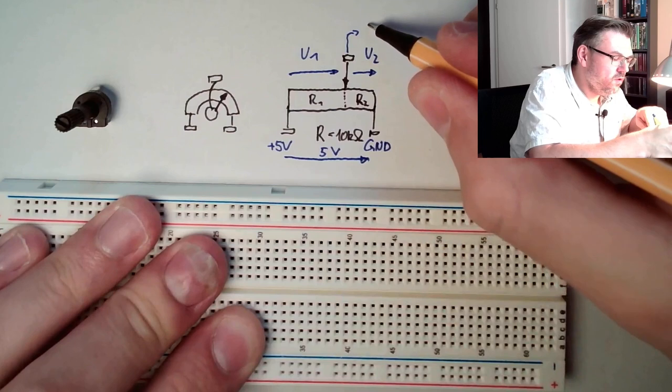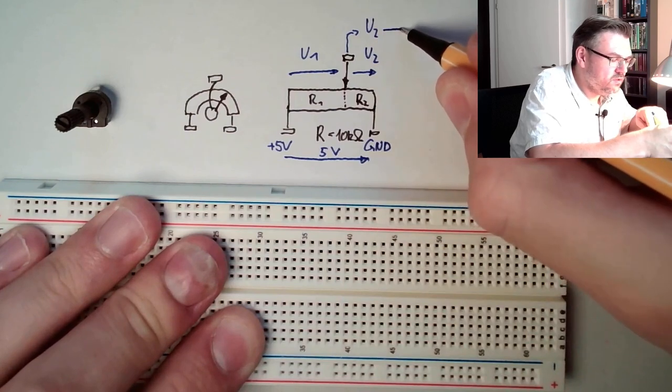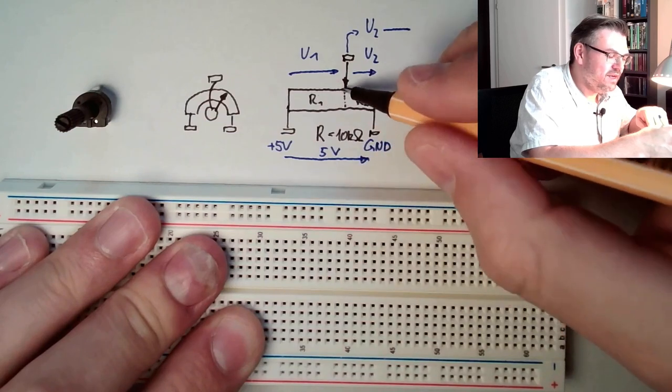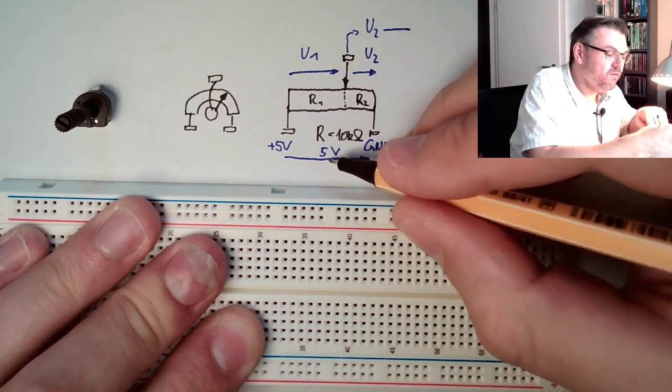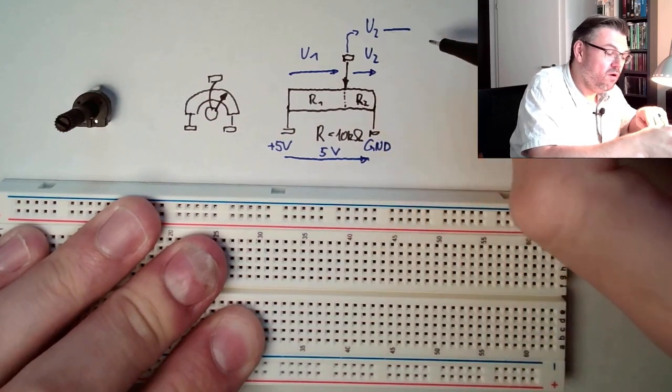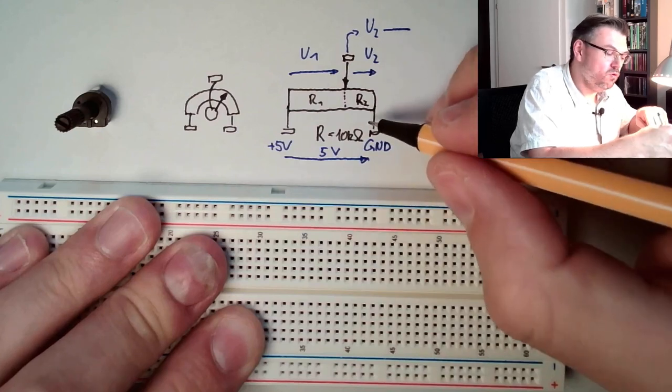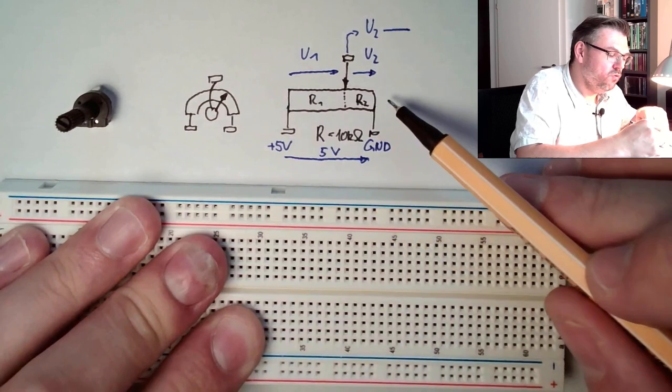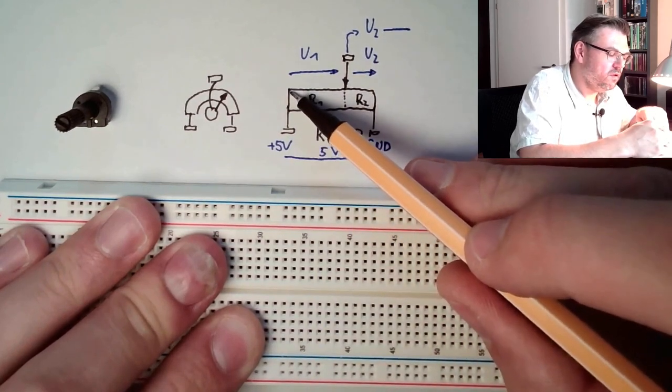So here we have U2, and if we connect this to an analog input, we can with the slider select which part of the 5 volts we are using.